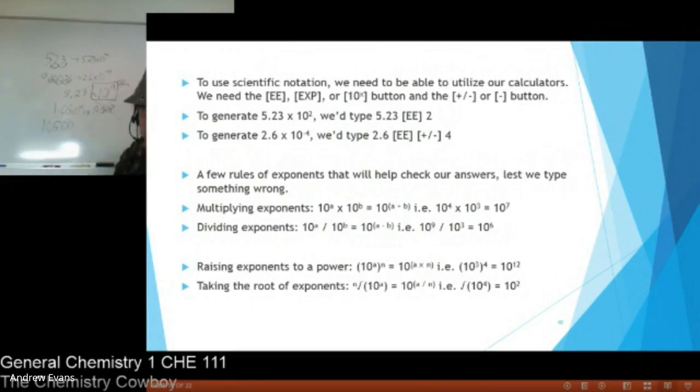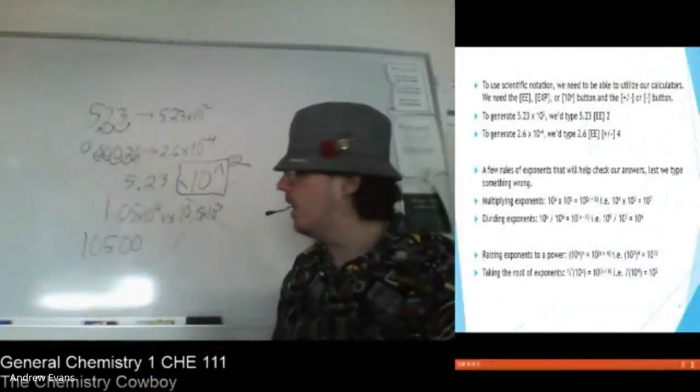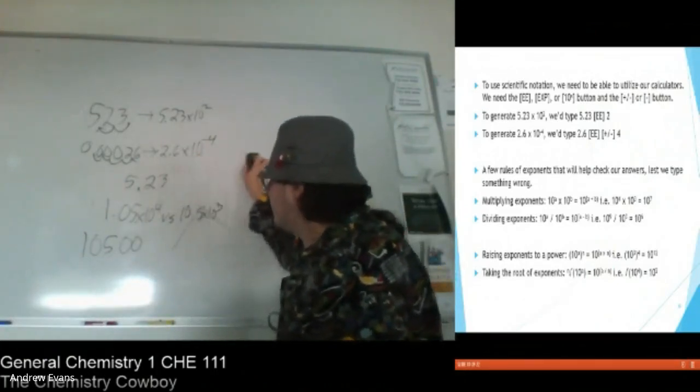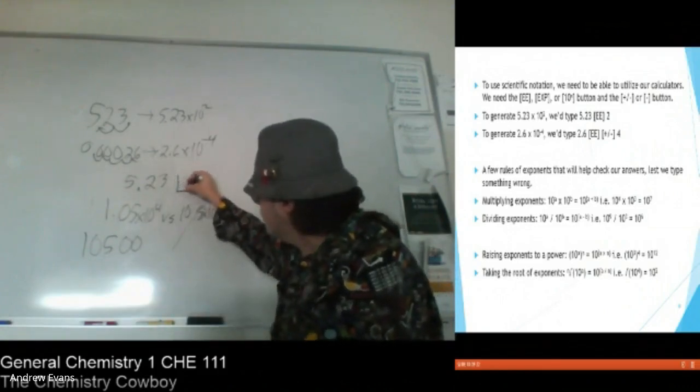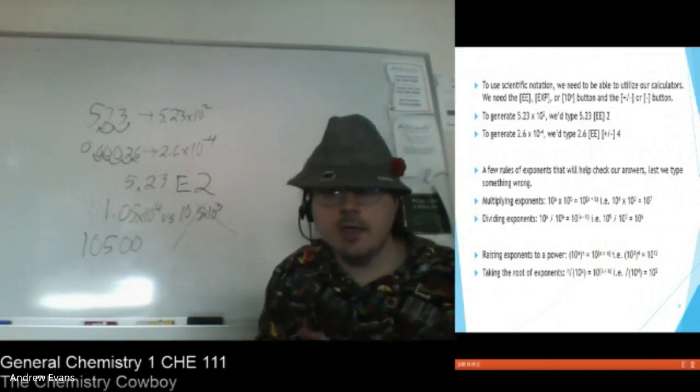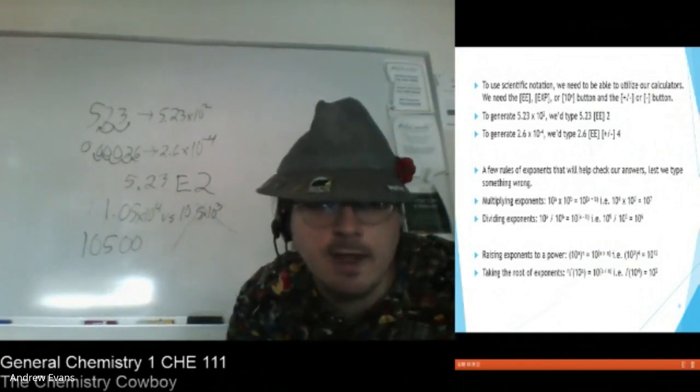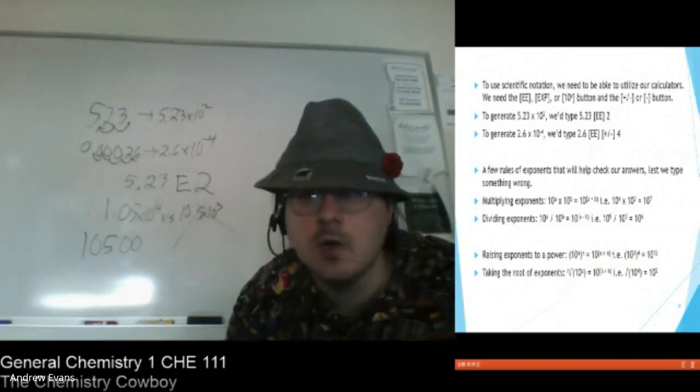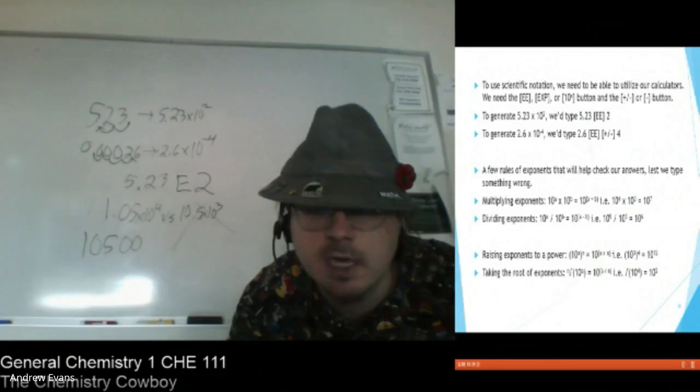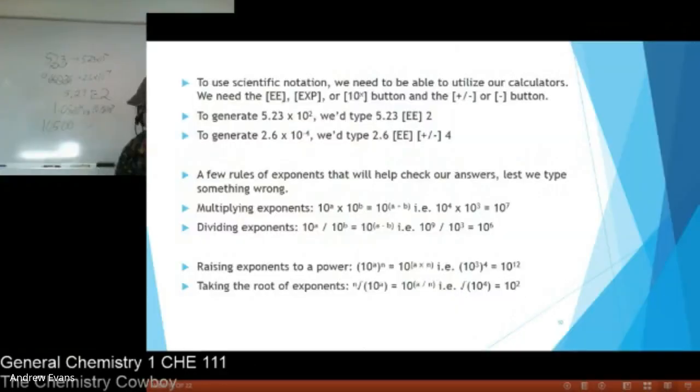Instead of saying 2.6 times 10 to the negative 4, I can write 2.6 EE negative sign 4, and that will give me the same thing. Oftentimes when I'm writing on the board, I might write this as 5.23 E 2. Now that E is standing for that exponential, so it's a 5.23 raised to the second power, and that is perfectly acceptable. That's how your calculator is often going to give that, so don't be overly confused when you see that.